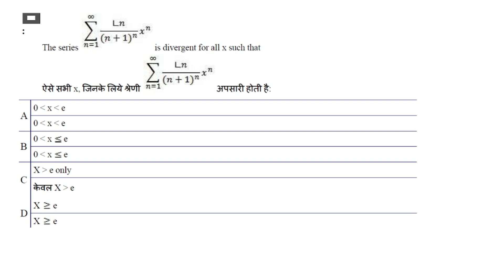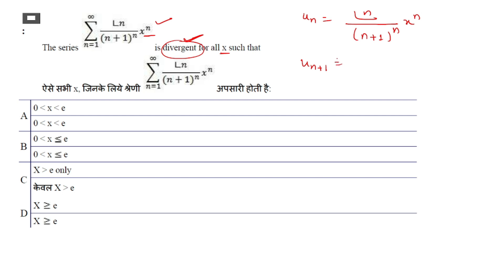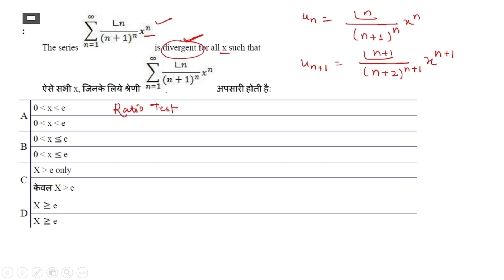Next question: the series Σ n!/(n+1)^n · xⁿ is divergent for all x such that — we need to find the range of x for which this series diverges. We have uₙ = n!/(n+1)^n · xⁿ. So uₙ₊₁ = (n+1)!/(n+2)^(n+1) · x^(n+1). We apply the ratio test to check convergence or divergence.